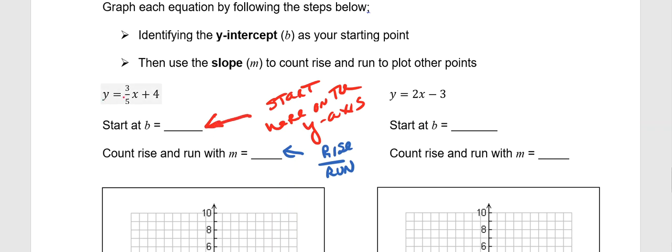So, graph the equation Y equals 3 fifths X plus 4, referring back to the notes on the front, referring back to this video as you need to. And graph that line. Likewise, graph this equation, Y equals 2 X minus 3, following the notes on the front or reviewing this video. And graph the line for Y equals 2 X minus 3. And we'll do more practice of this when we come to class.